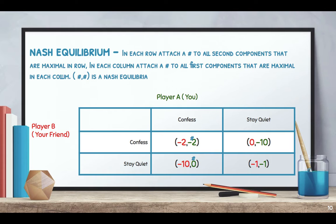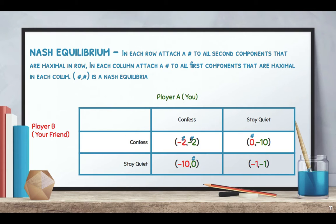Looking at the rows for the second component: between negative two and negative ten, negative two is the larger number. Between zero and negative one, zero is the larger number. So we'd rather spend two years in jail than ten, and no time rather than one year. For the first components in each column, we put a dash next to negative two instead of negative ten, and zero instead of negative one. Confessing is our optimal solution because it takes our options from spending two years to possibly going home, not knowing what our partner is doing.